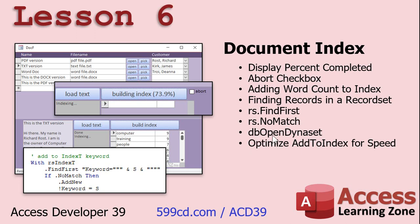We're going to have to use OpenDB and OpenDynaset, which I forgot about when I was writing the code the first time — then got an error message and had to fix it. We're also going to add a word count, which is another reason for adding the record set loop. So you can see, for example, that the word 'computer' appeared in a document nine times, and the word 'people' appeared seven times. We'll do a lot more record set coding, concluding our document index with a lot of cool new material.